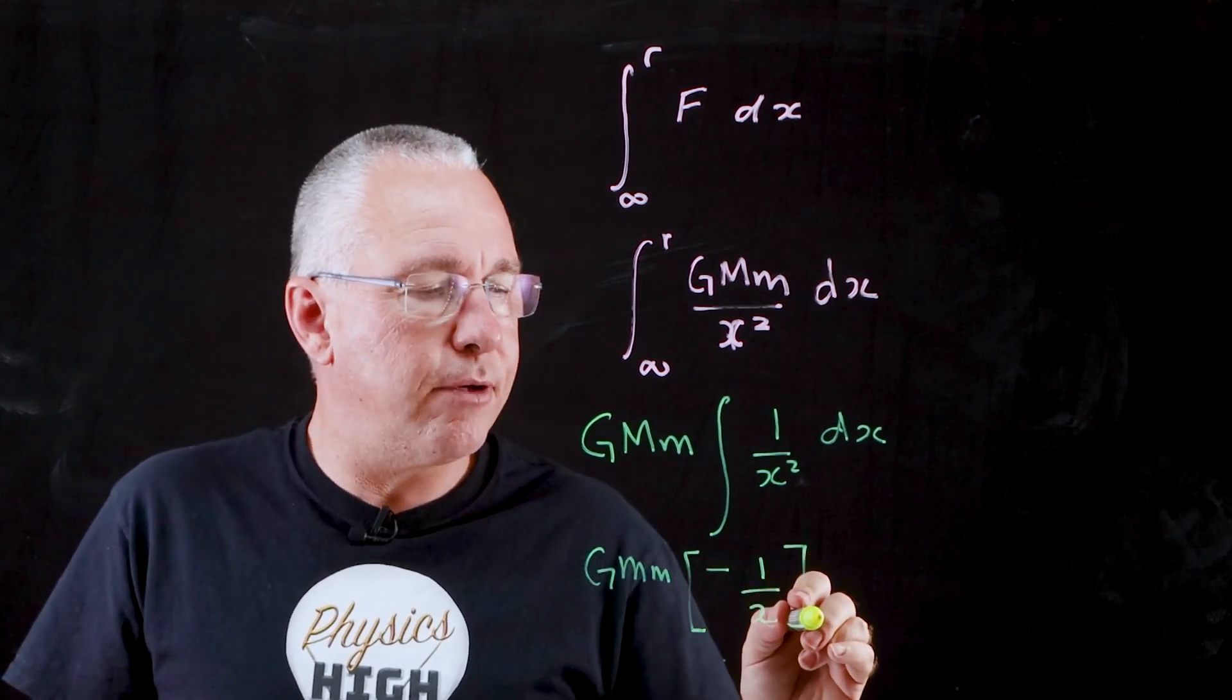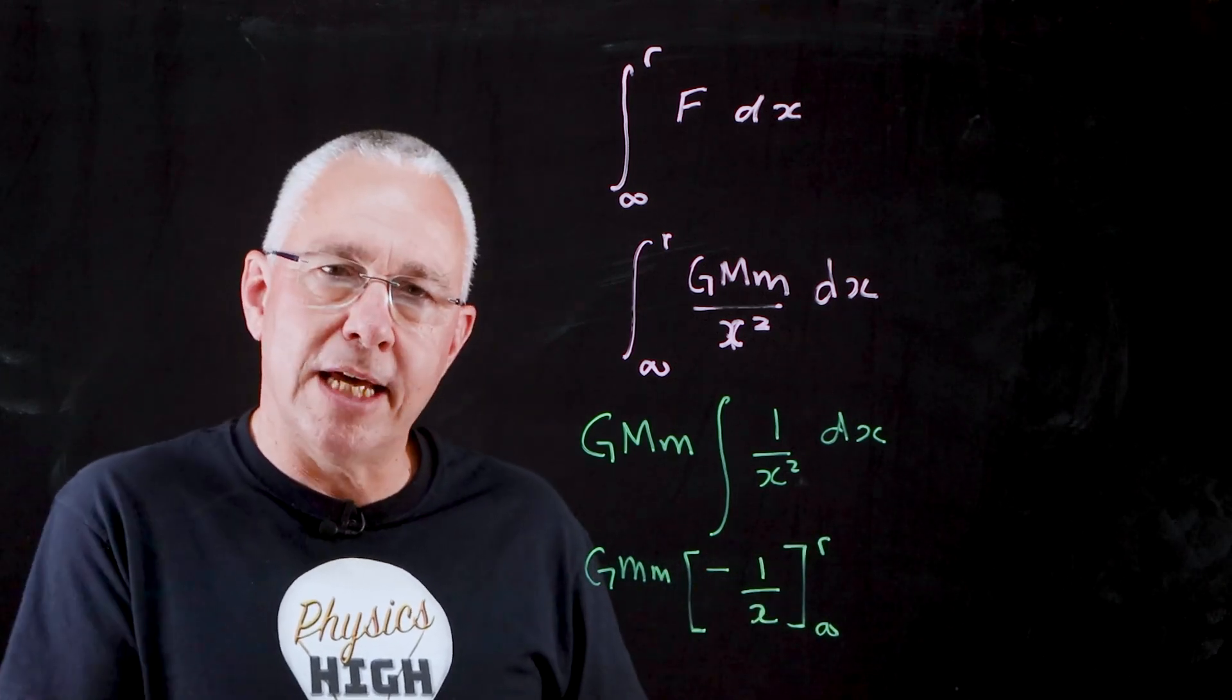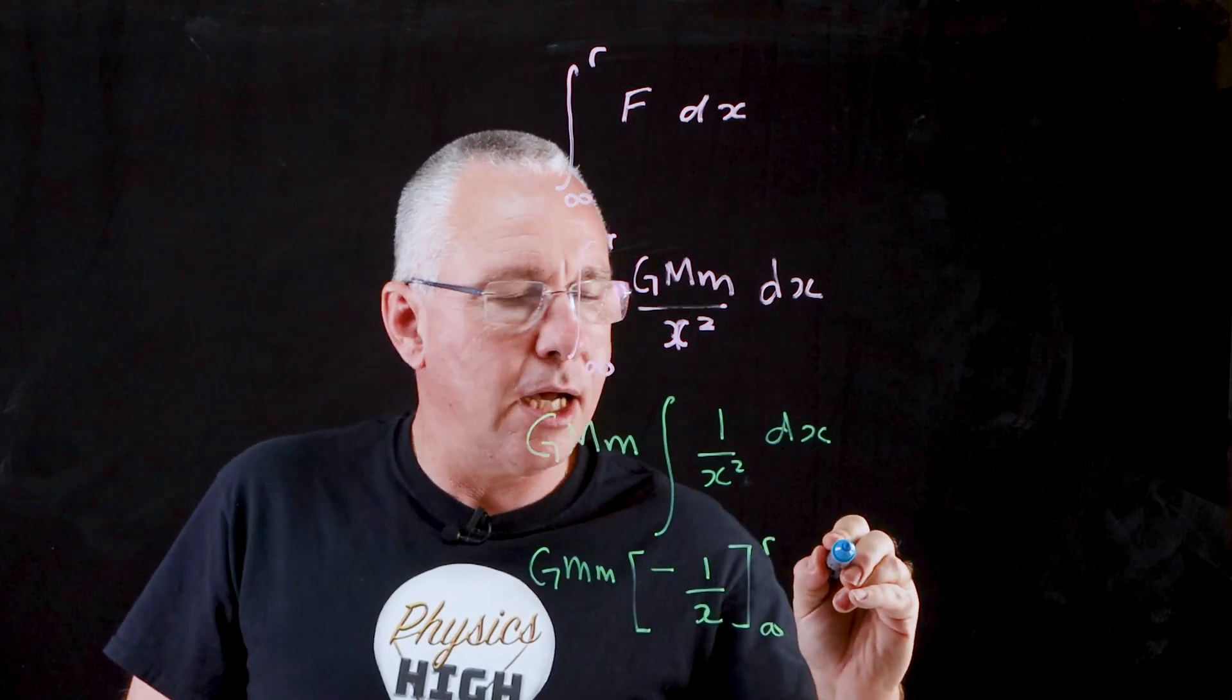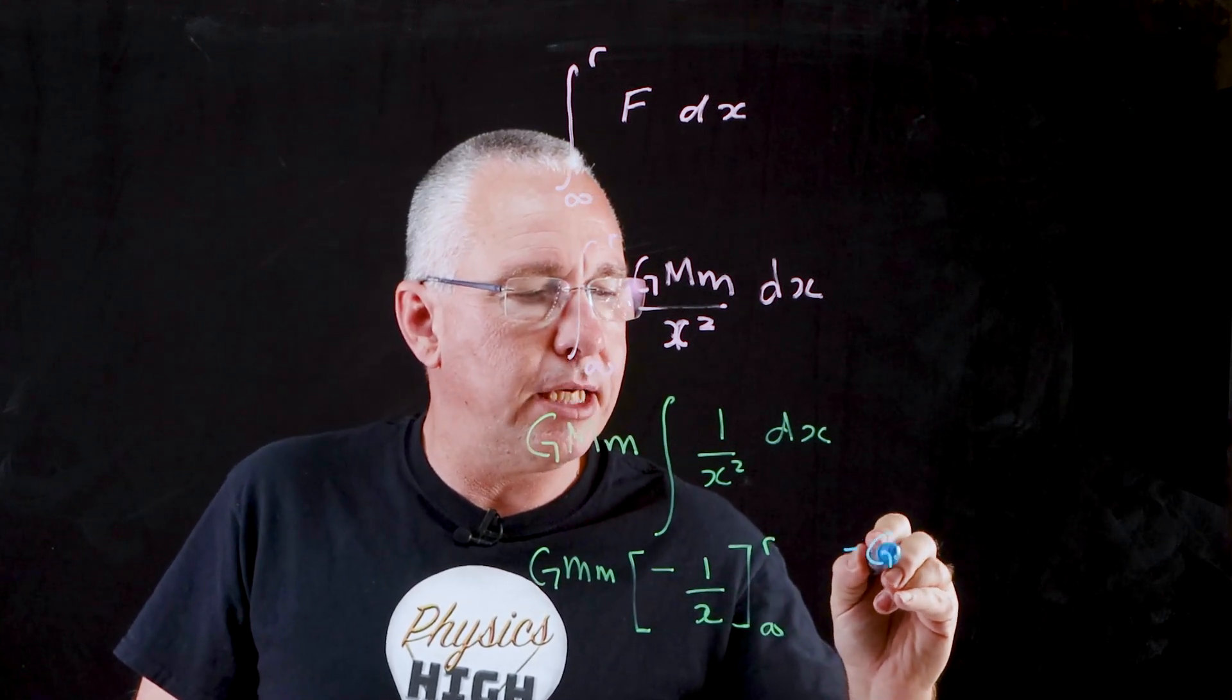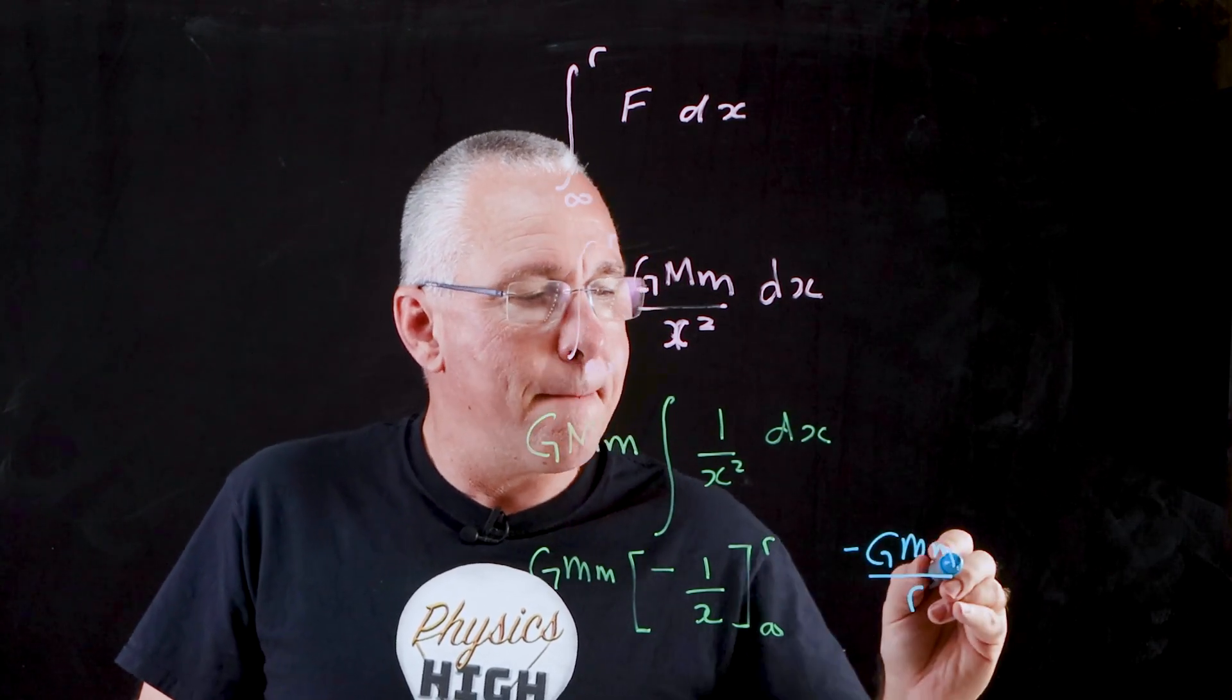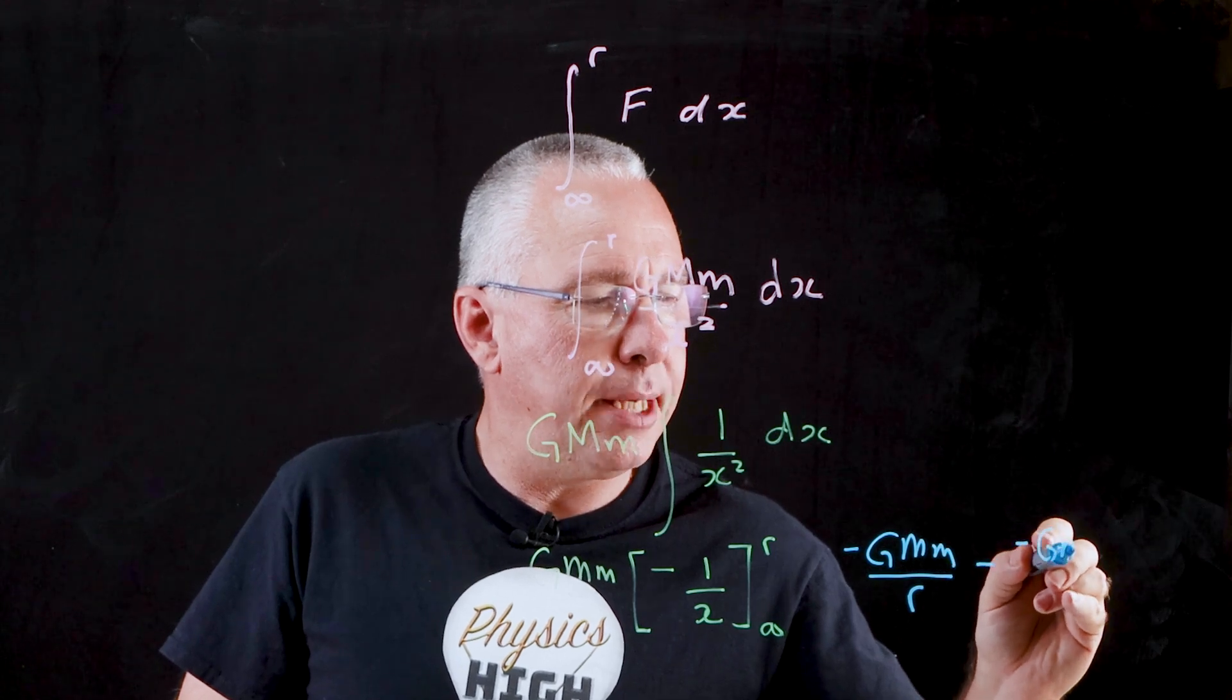And of course we're going from infinity to r. All that is left now to do is expand this out. When I substitute r in, I get negative GMm over r minus negative GMm over... now of course this approaches infinity, so basically we can write infinity over there.